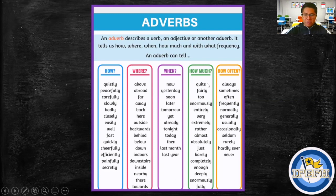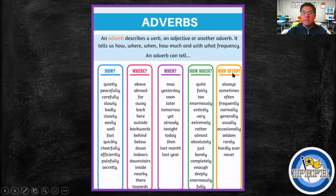An adverb can tell us HOW MUCH — for example: quite, too, enormously, extremely, firmly, almost, completely, enough, deeply. And of course, an adverb can tell us HOW OFTEN — for example: always, frequently, normally, occasionally, hardly ever, or never.